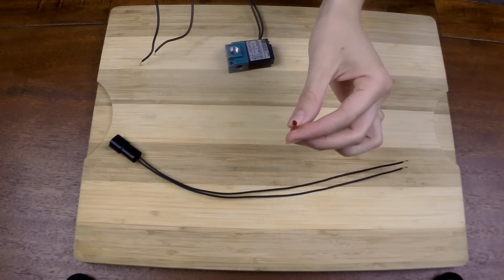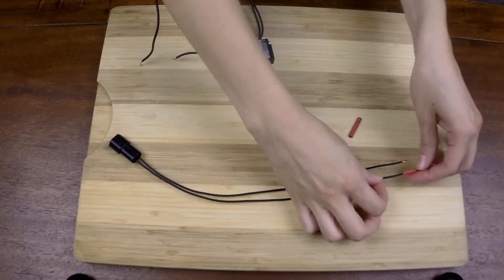Next you're going to want to take your heat shrink and put it on either side of the wiring harness.